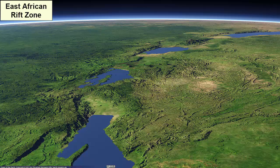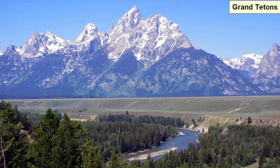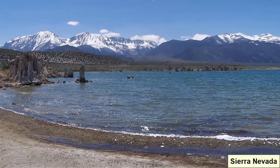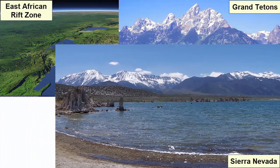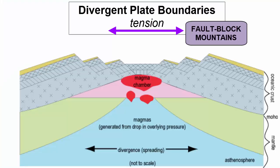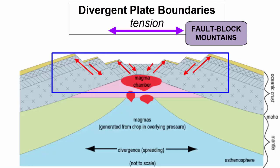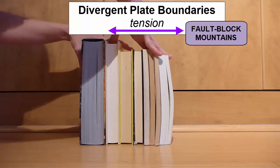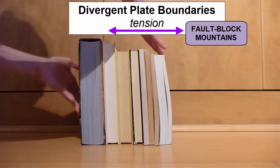The ridges of the East African Rift Zone, the Grand Tetons in Wyoming, and the Sierra Nevada in California. What kind of mountains are these? Fault block mountains. When a region is subjected to tension, which happens at divergent plate boundaries, the land is stretched and thinned. The crust will break into blocks that pull apart along faults. Imagine continental crust broken into blocks separated by faults — when tension is applied and the blocks are stretched apart, the hanging wall slips down and the foot wall rises upward.